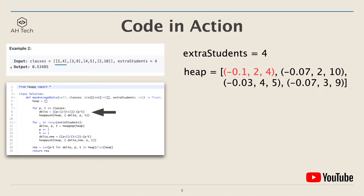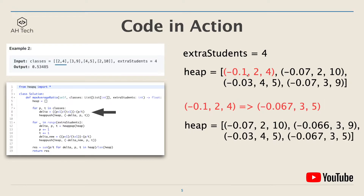Here we'll be looking at example two — this is the classes array and we have four extra students. The heap looks like this, and we can see that the first class [2, 4] has the highest absolute delta of 0.1, meaning that if we assign an extra student to this class, its average score will increase the most compared to other classes.